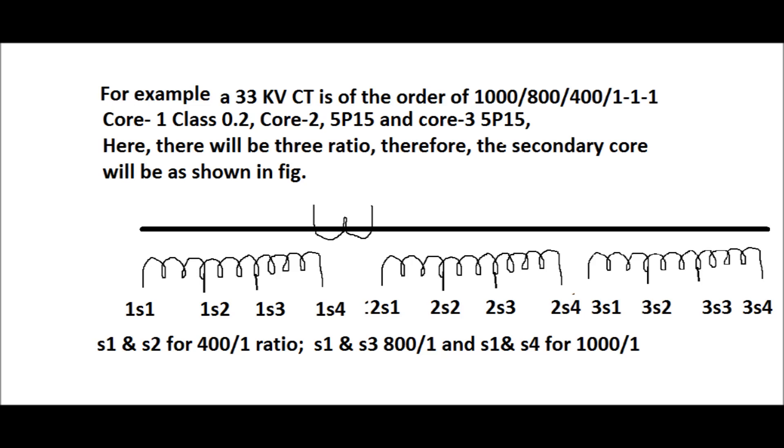In this case, the common is S1 terminal and the other terminal is used with the help of S1. That is S1 and S2 or S1 and S3 and S1 and S4. If first and second core are used and the third core is not used, then third core shall be always shorted. If not shorted, then there will be chances of CT damage that will be discussed later.